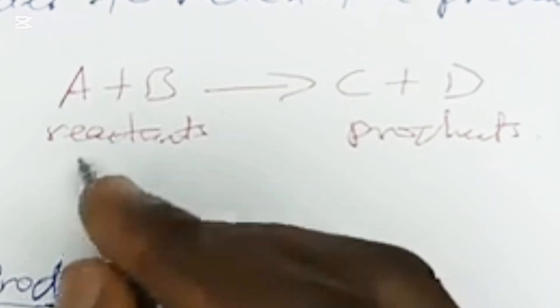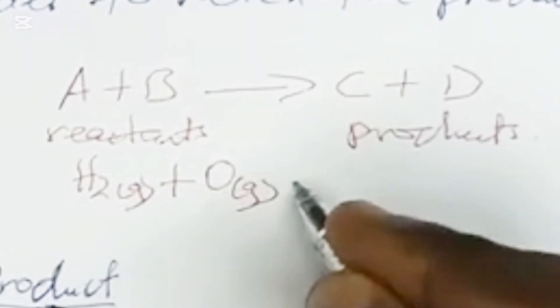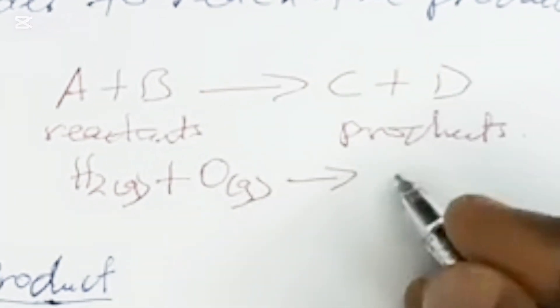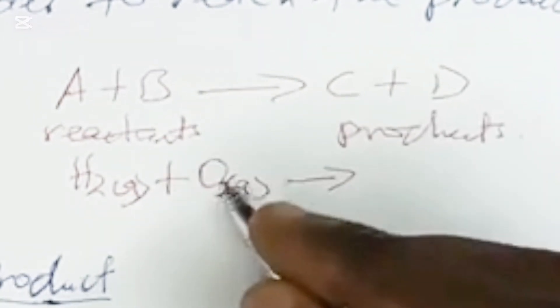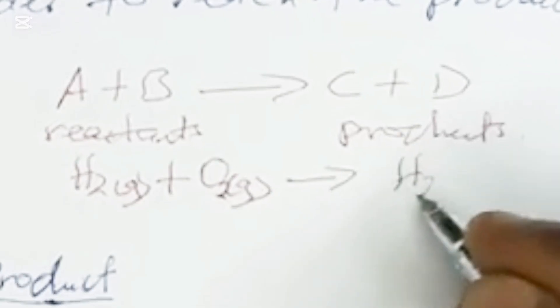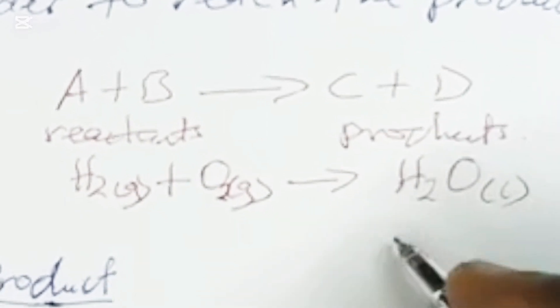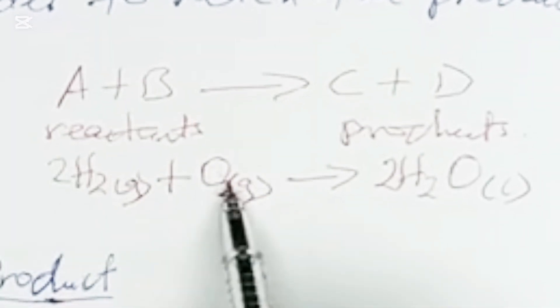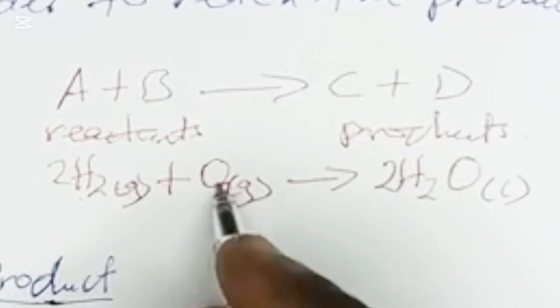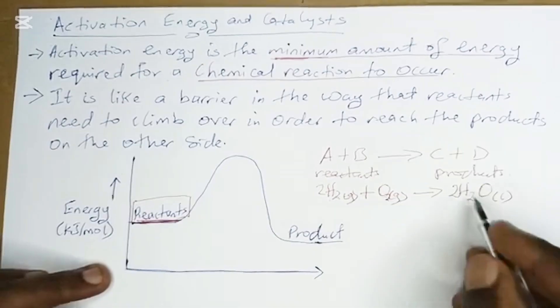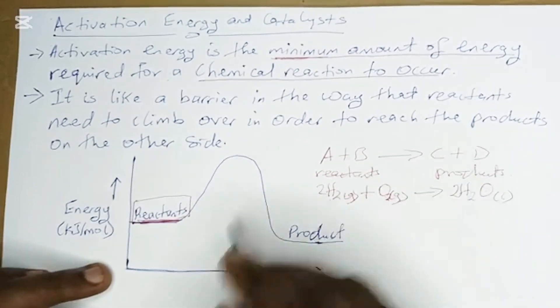Another example is when hydrogen gas combines with oxygen gas to give us water: 2H₂ + O₂ → 2H₂O. So hydrogen reacting with oxygen gives water. Hydrogen and oxygen are the reactants and water is the product.